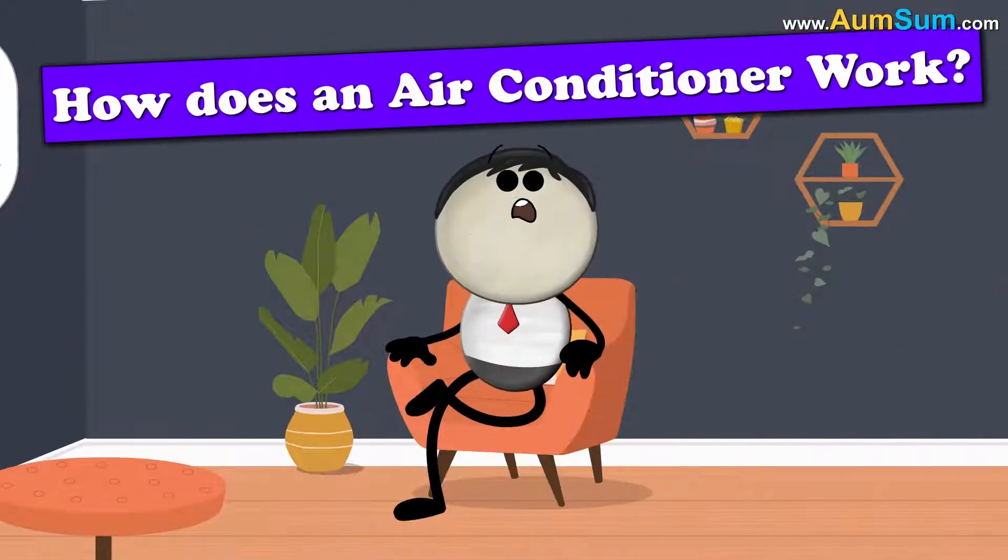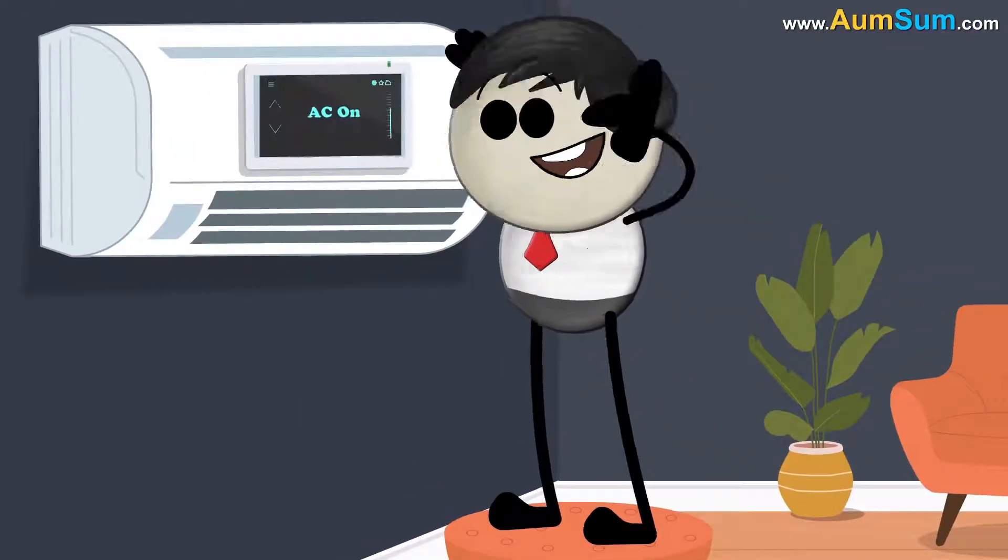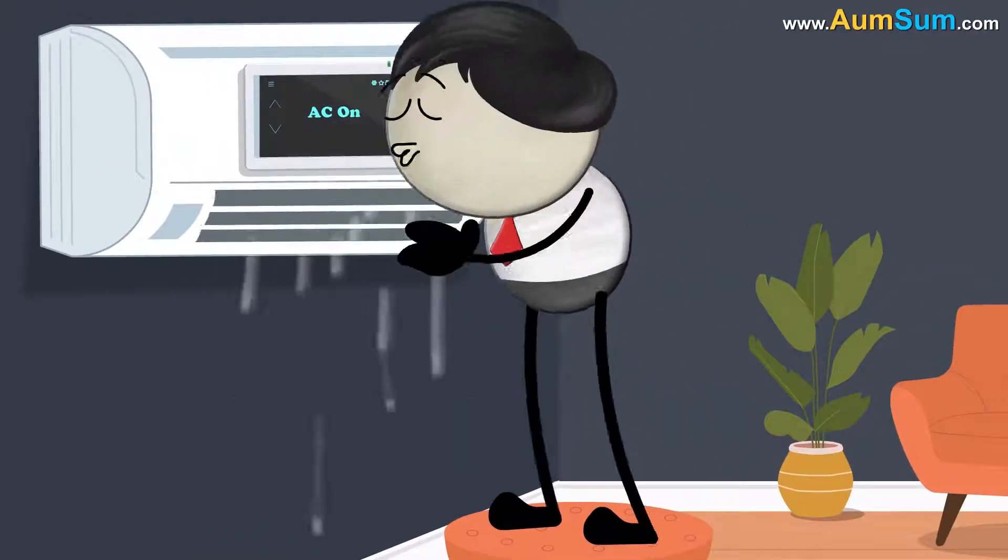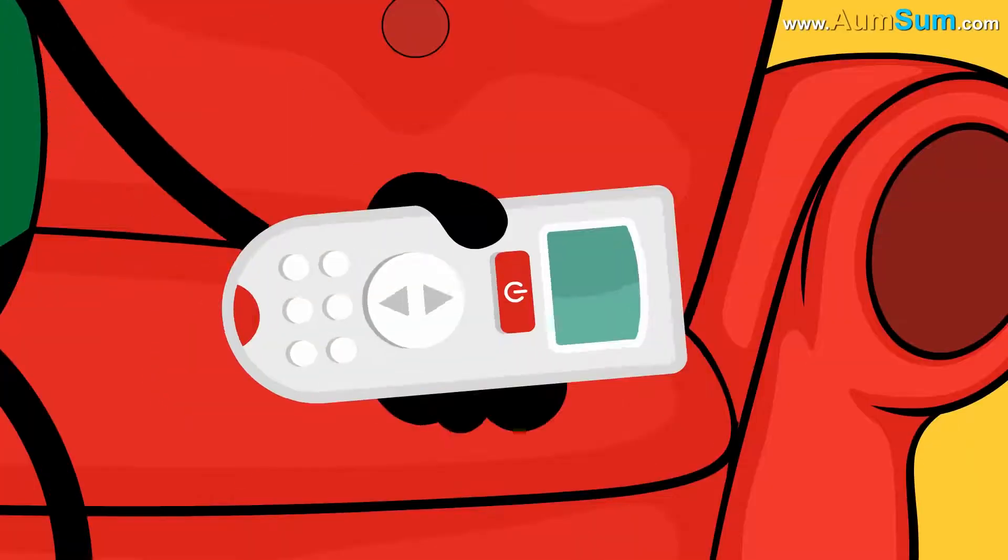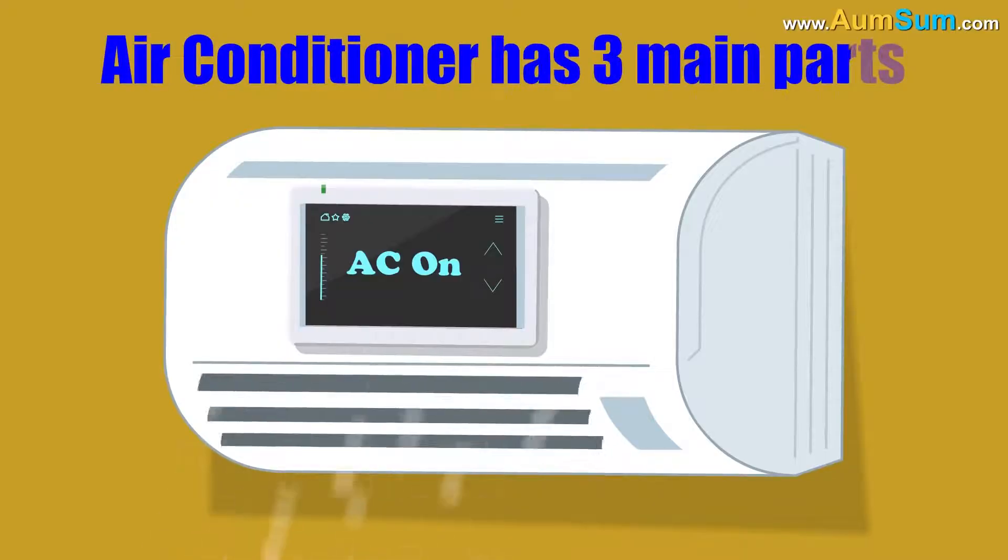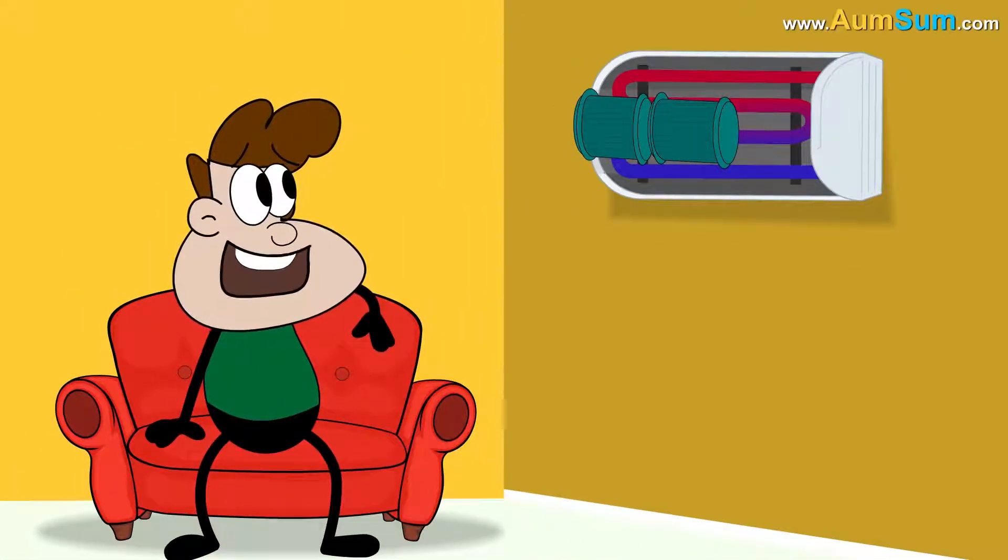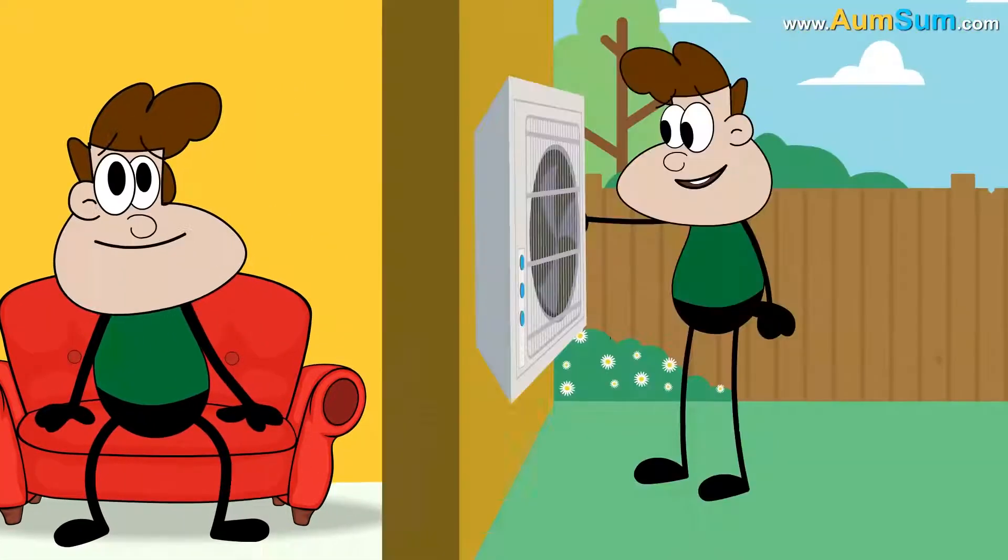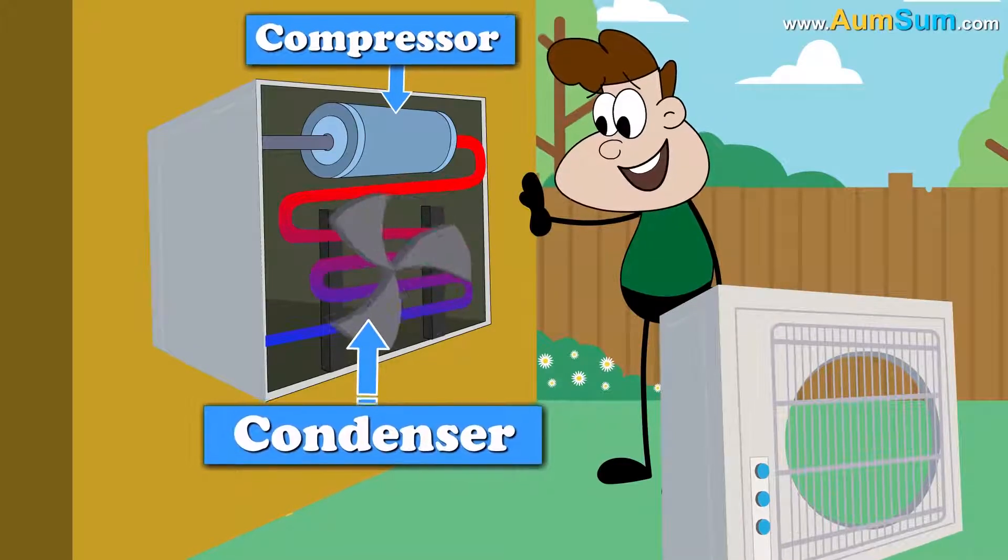How does an air conditioner work? Simple. I blink and it starts working. Oh AumSum. An air conditioner has three main parts. Firstly, evaporator which is located inside the house. Finally, compressor and a condenser which are usually located outside.